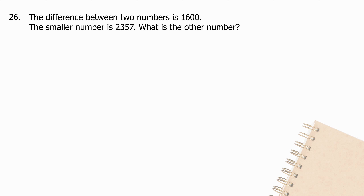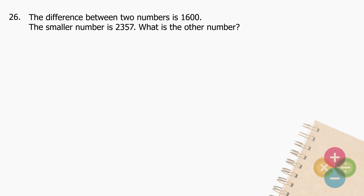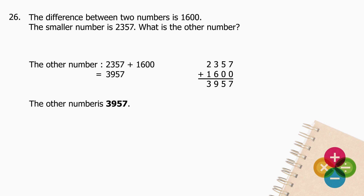Question 26: The difference between two numbers is 1600. The smaller number is 2357. What is the other number? Add 2357 to 1600 and the sum is 3957. The other number is 3957.